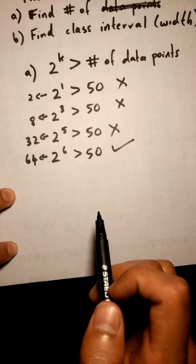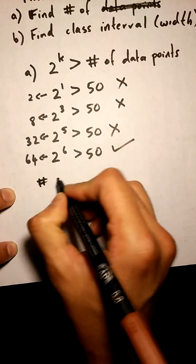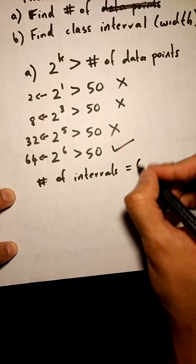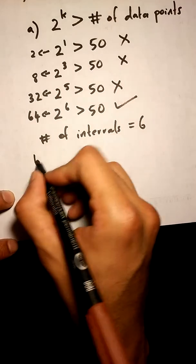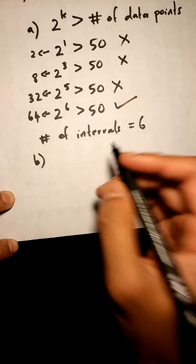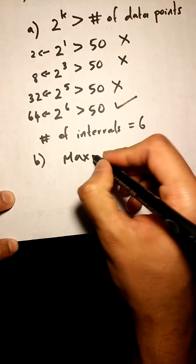So we can say number of intervals equals 6. Finding the interval width is not too difficult either. It's basically following another formula, and your formula is basically max minus min over number of intervals.